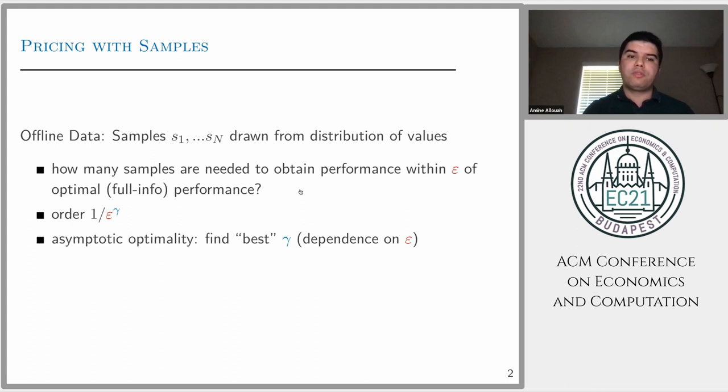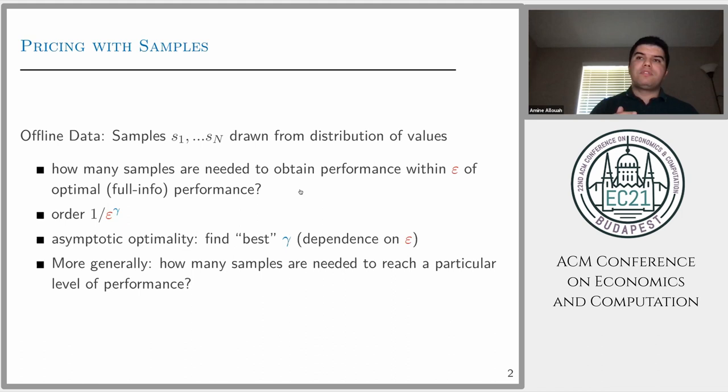The question there is how should we find the best mechanism to achieve this near-optimal performance. A related question, which is more general, is how many samples are needed not only to achieve near-optimal mechanism, but to achieve, let's say, 70% of the optimal performance or any given level of performance.